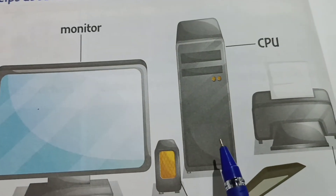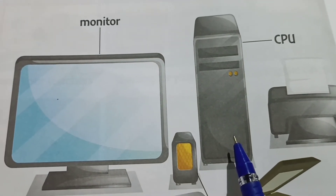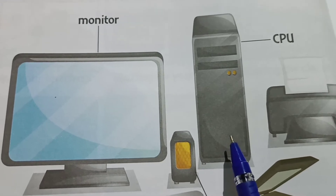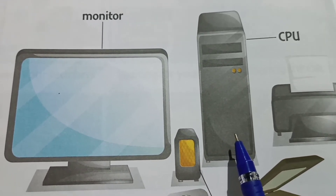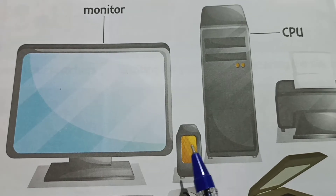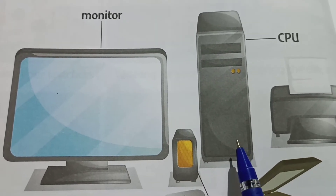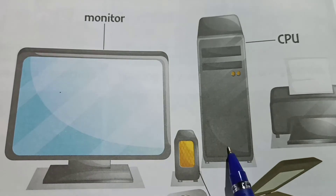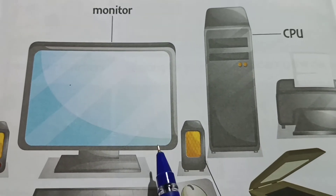Now what is this, children? CPU. So as we human beings have a brain to think and to remember, in the same way the computer also has its brain, which is called the CPU. This is the brain of the computer.